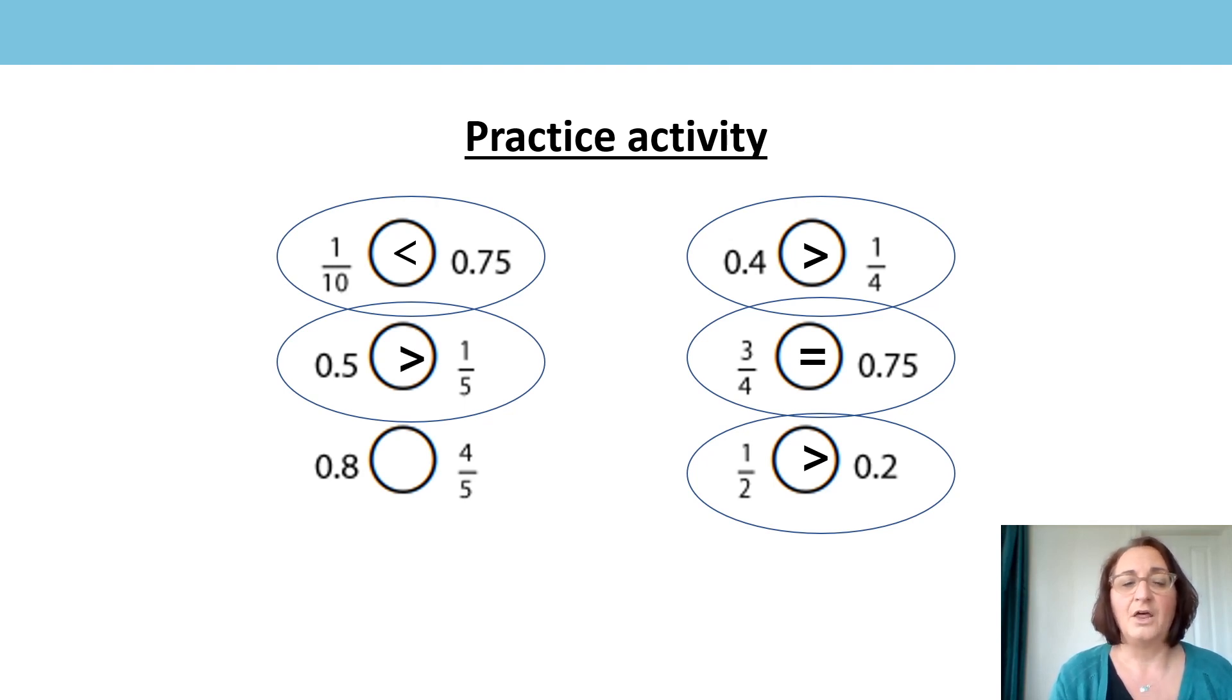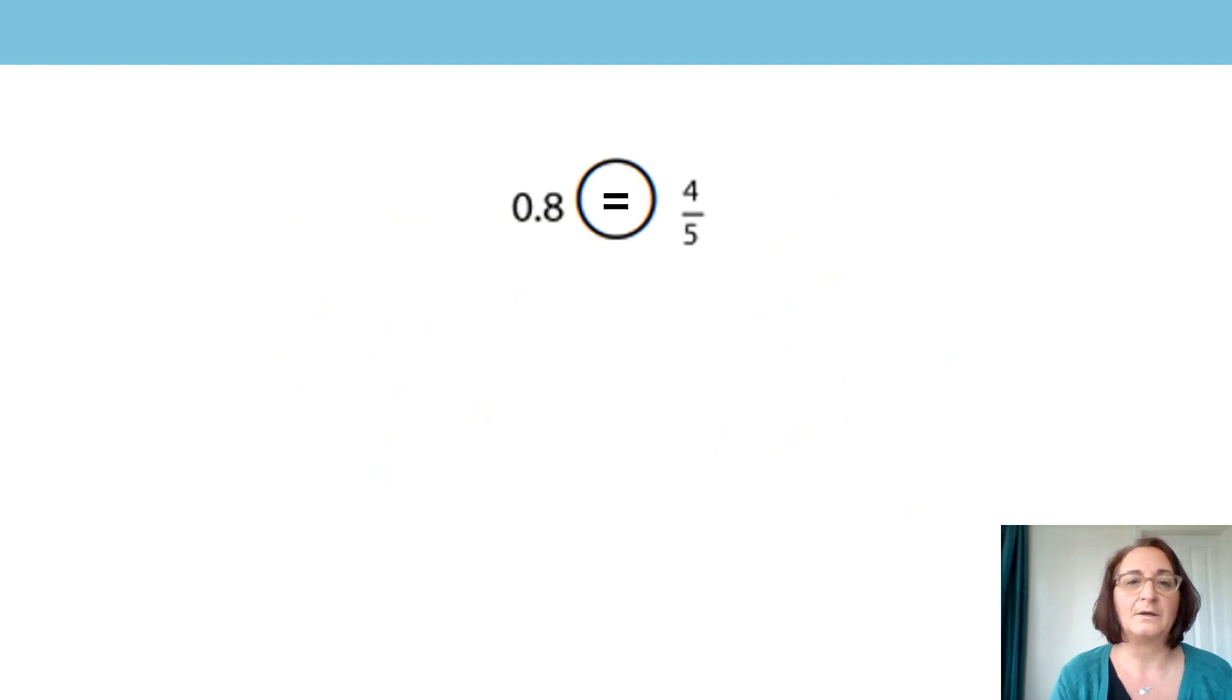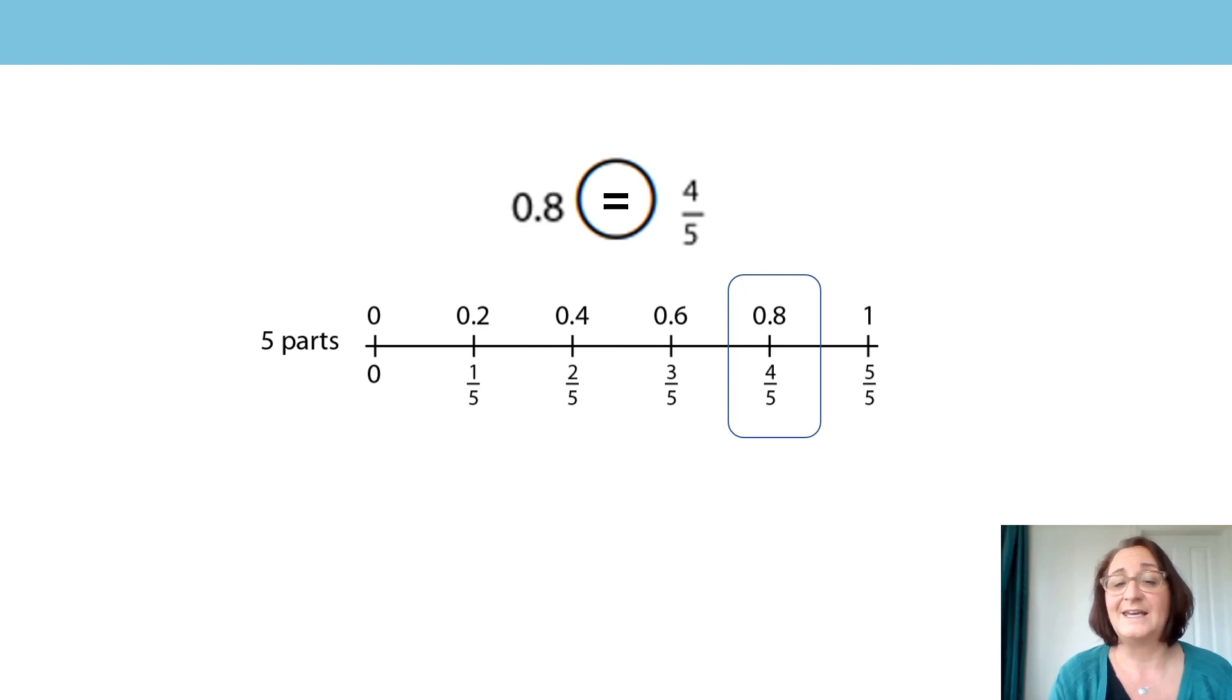Okay the one that I wasn't quite sure on was the next one which was 0.8 and 4 fifths. So I had a little think about it and I decided that I needed to draw a number line so I drew a number line out so 0.2 is one fifth on the number line and if I look and see where 0.8 is it's on the same point as four fifths. So 0.8 and four fifths are equal they are the same.